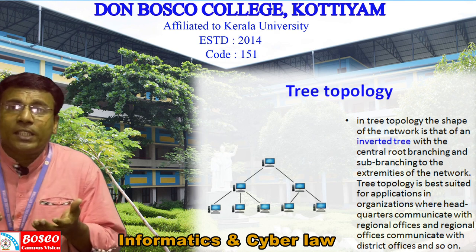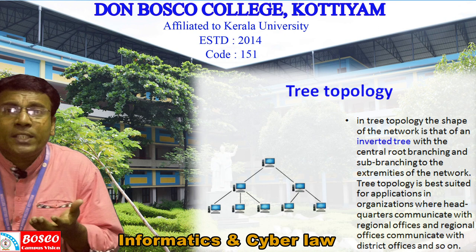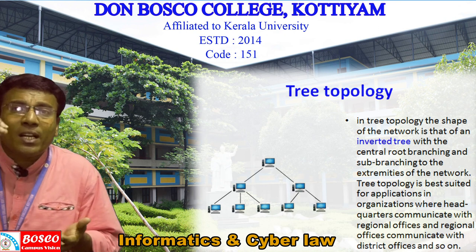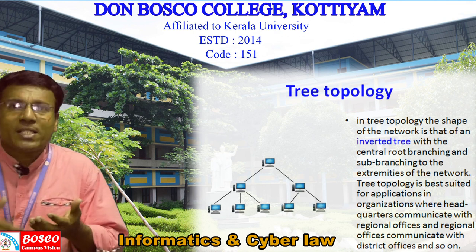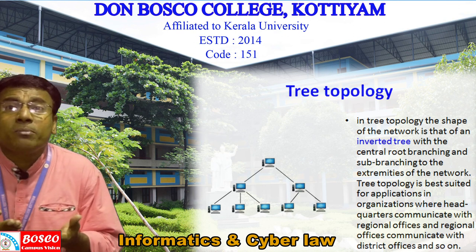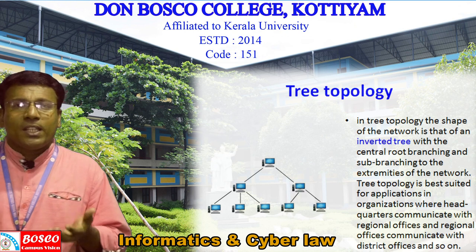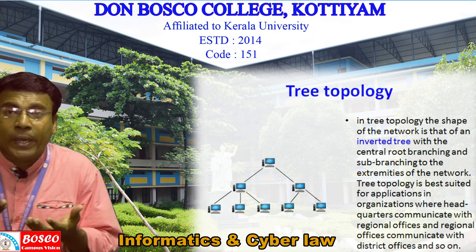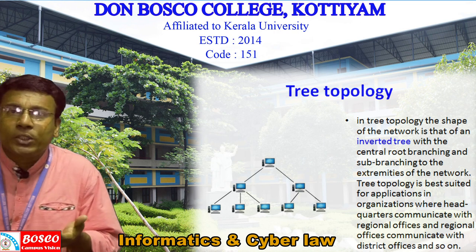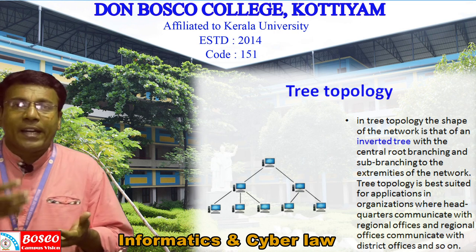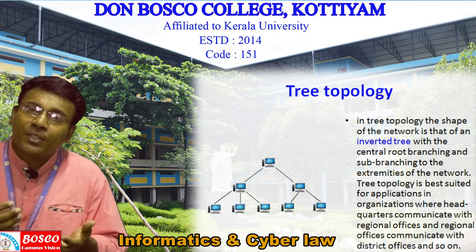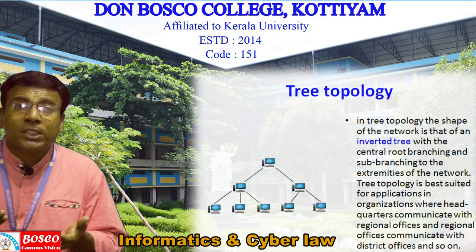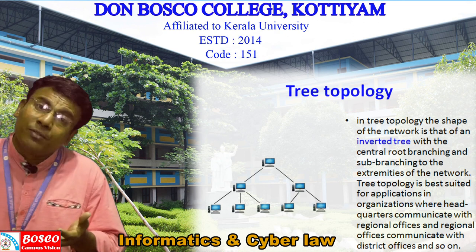In a tree topology, the shape of the network is that of an inverted tree, with a central root branching and sub-branching to the extremities of the network. Tree topology is best suited for organizations where headquarters communicate with regional offices, regional offices communicate with district offices, and so on.